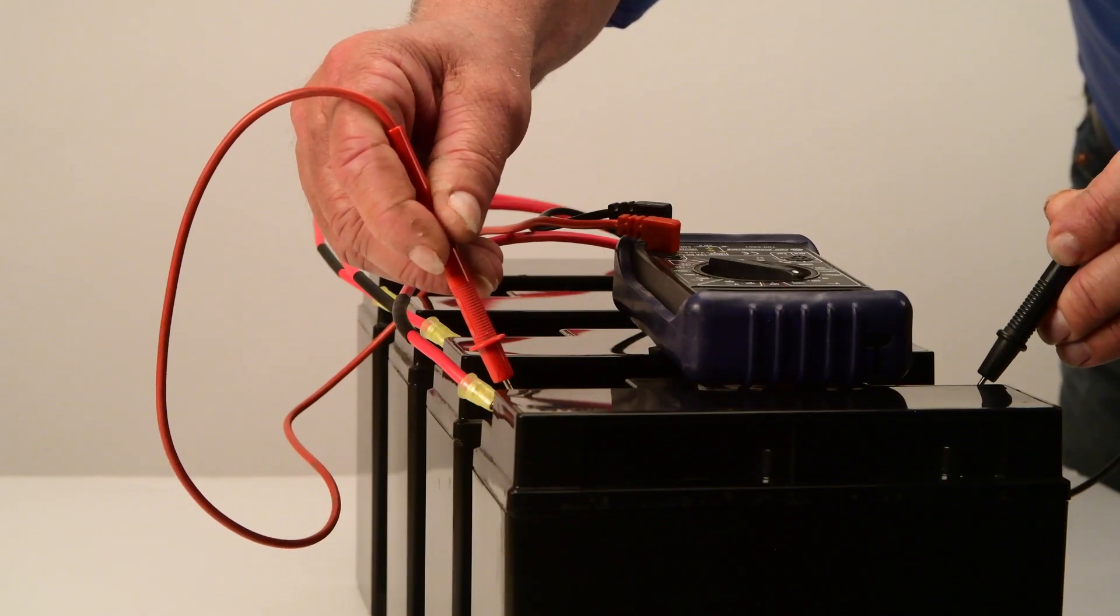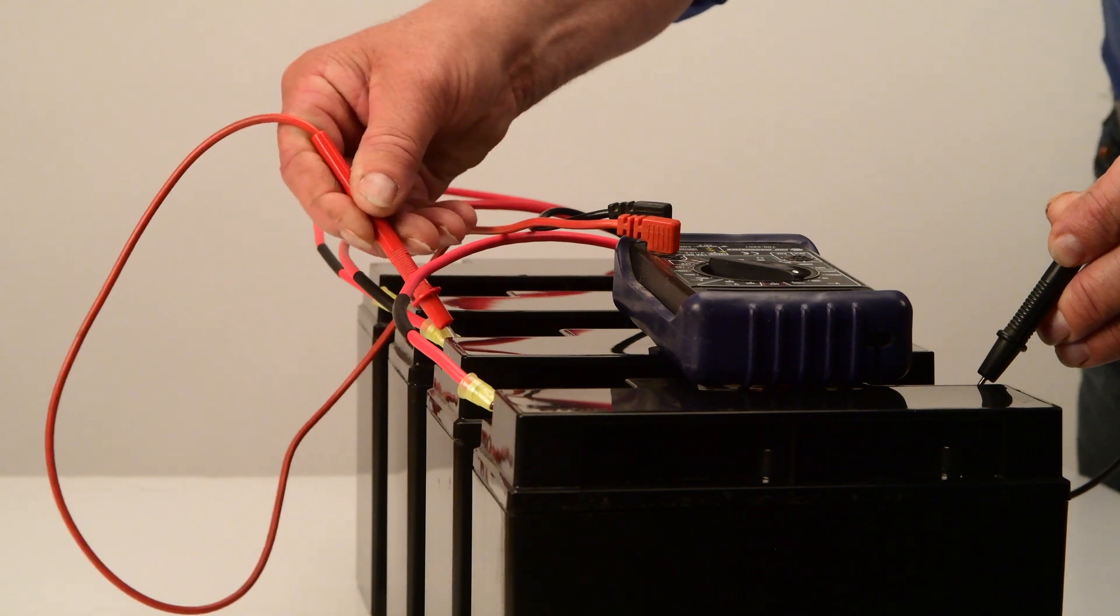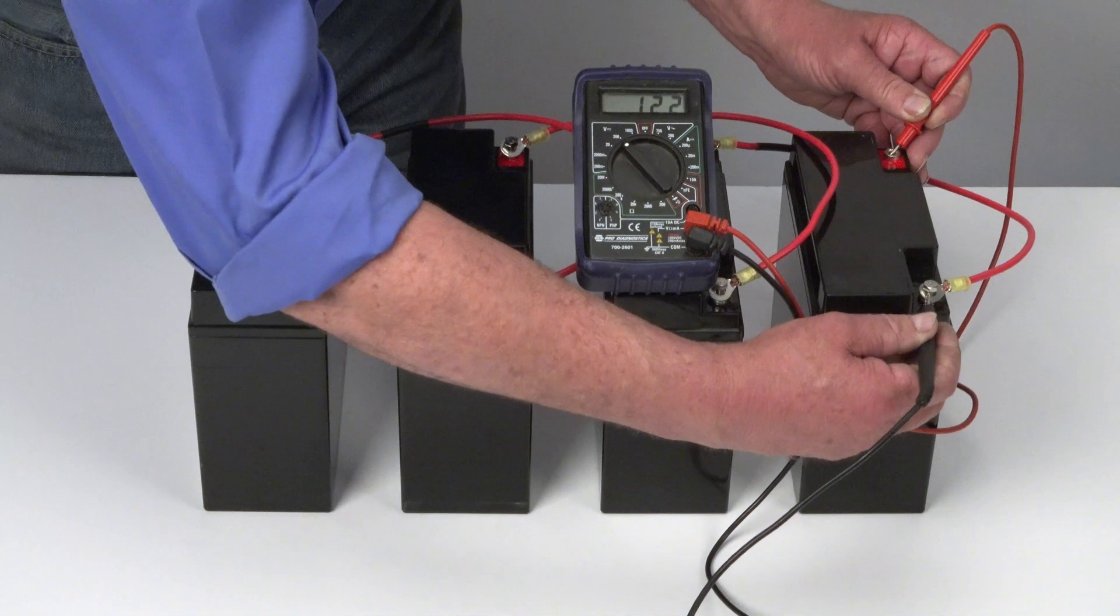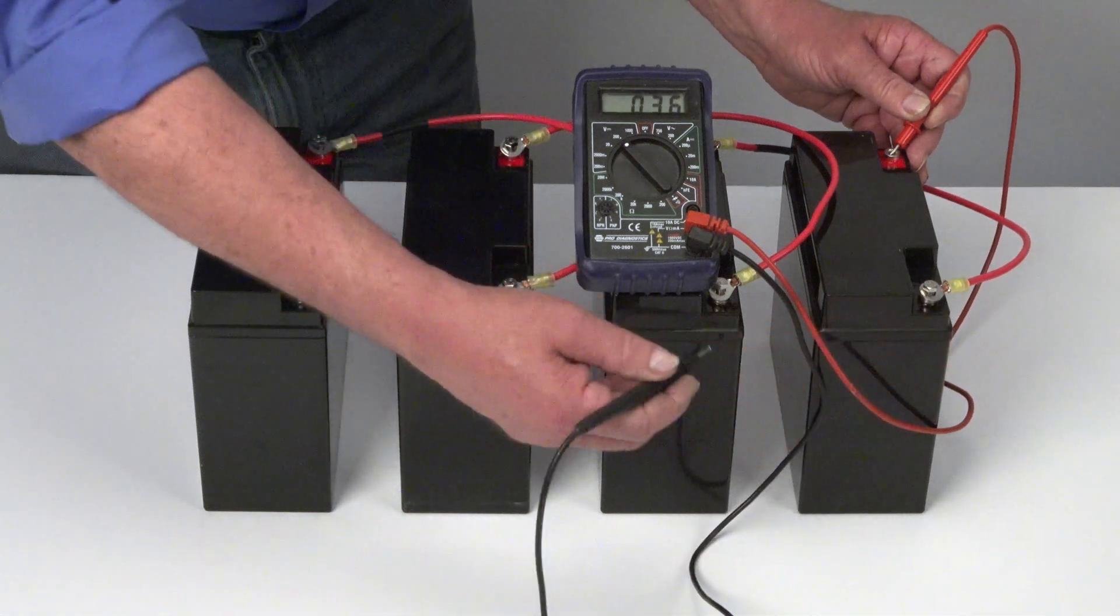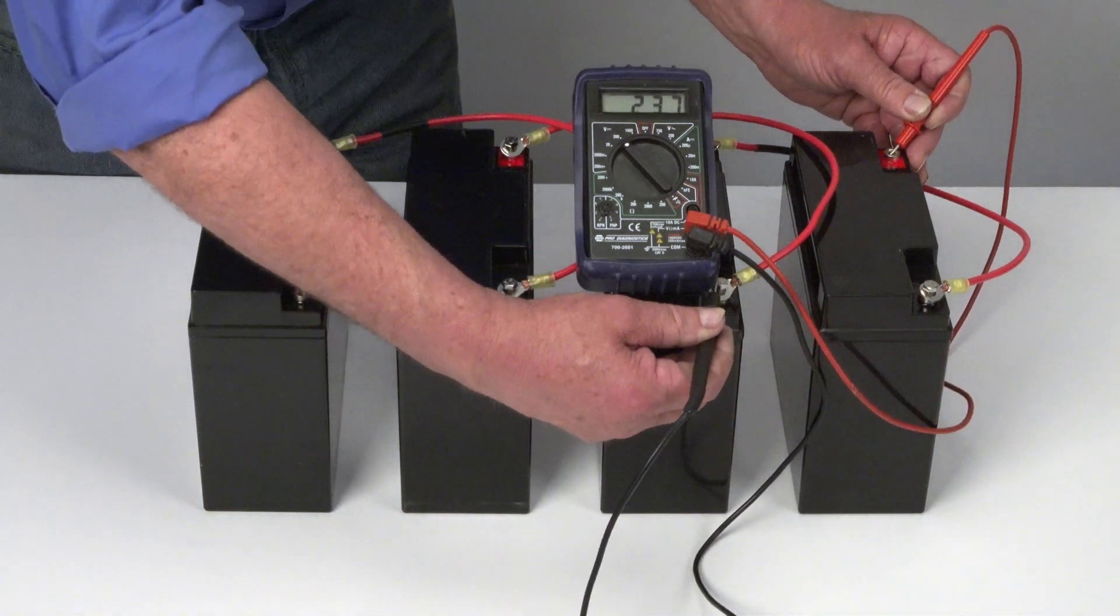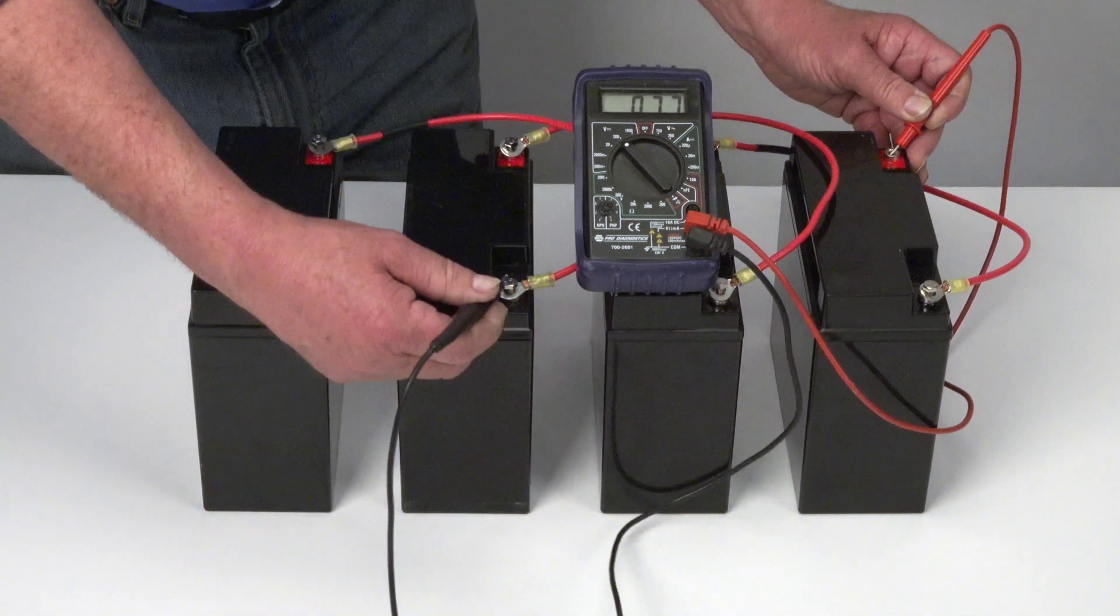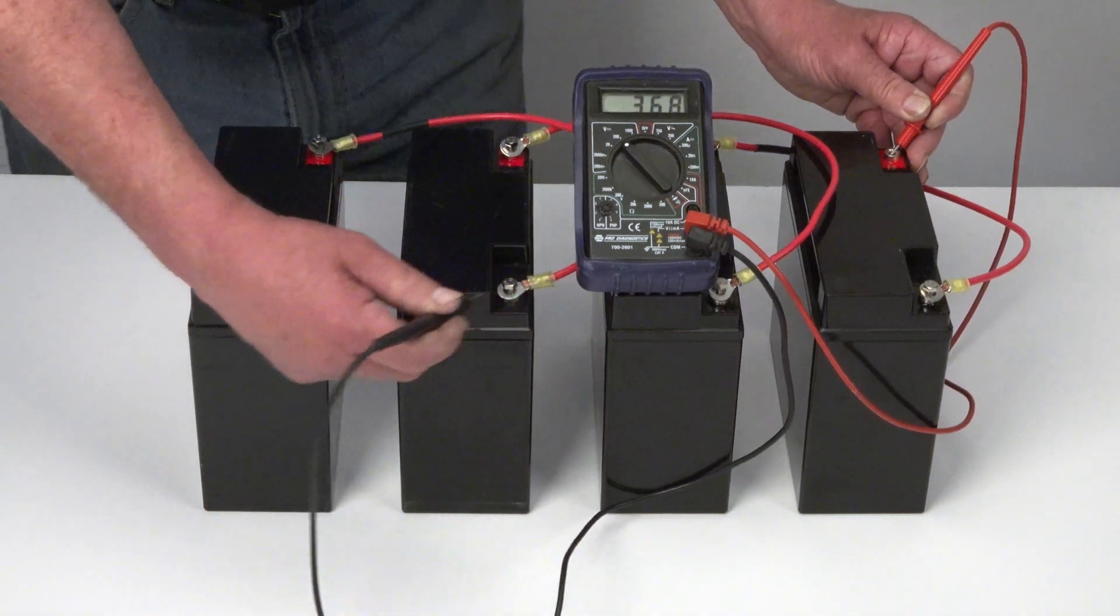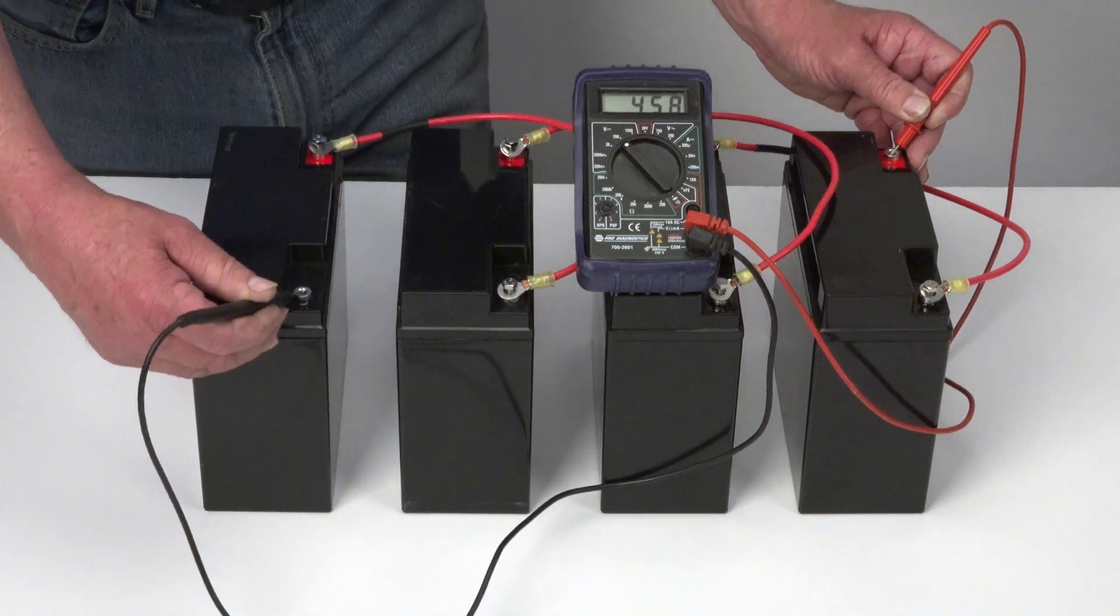Let's check our wiring. Using this voltmeter, I can now test the voltage between terminals. This gives you a nominal 12 volt. These terminals give you 24 volt. Between three batteries, a nominal 36 volt. And here is 48 volts.